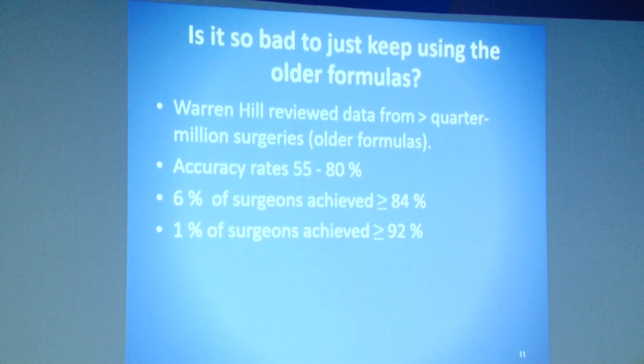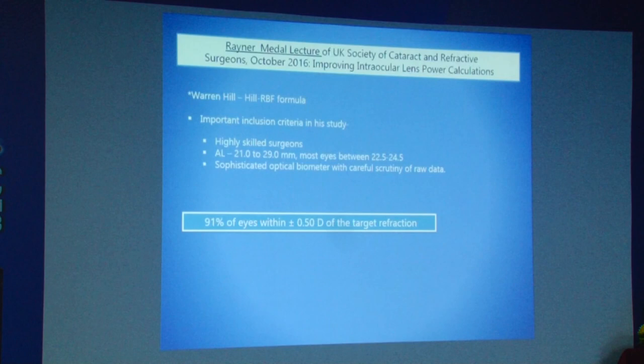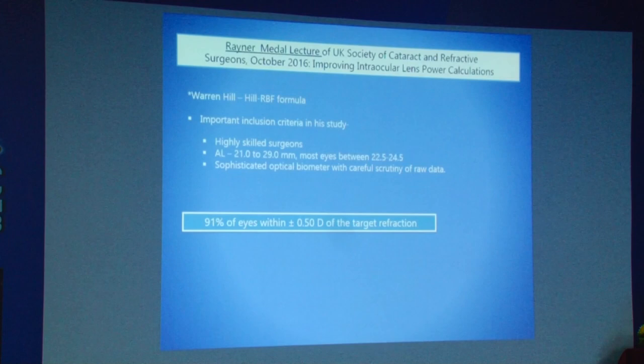Is it bad to keep using older formulas? Yes — a survey showed that only 1% of surgeons achieved accuracy greater than 92% within ±0.5 diopter using older generation formulas. It is now possible to achieve 91% of eyes within 0.5 diopter of target refraction if we change with the technology.